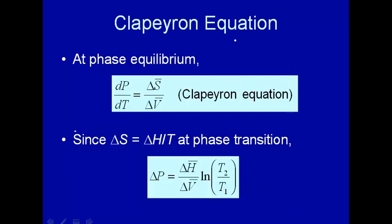Now let's talk about the Clapeyron equation. This is not the guitarist Eric Clapeyron — it's spelled differently. This is actually a guy who lived back in the 1800s. He developed this equation: at phase equilibrium, dP/dT is the change in partial molar entropy going from one phase to another, divided by the change in partial molar volume going from one phase to another.